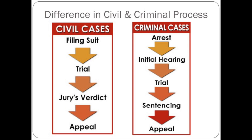In criminal proceedings and criminal cases, there is a different approach. Once an arrest has been made and an initial hearing is had on what the person is being accused of, there is a trial. Upon trial, if found guilty, there is sentencing. And if the defendant does not feel that the sentencing or the verdict was fair, they can always appeal. So we're going to take a look at that due process procedure, starting with different types of criminal charges.